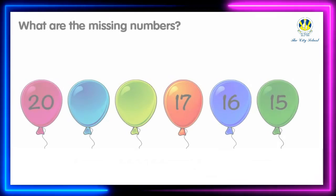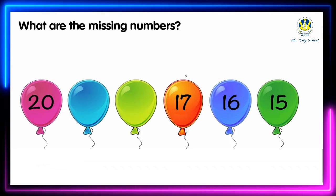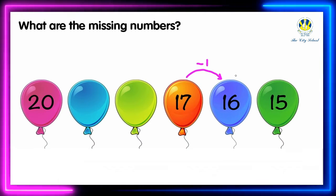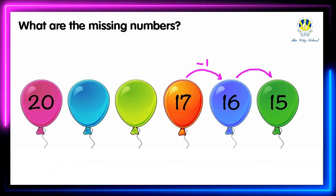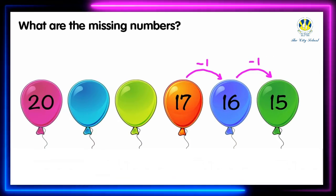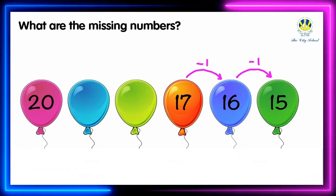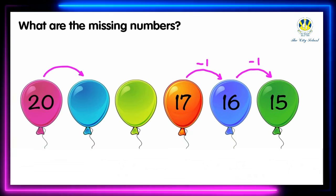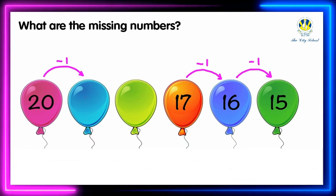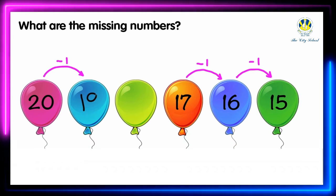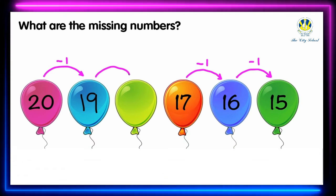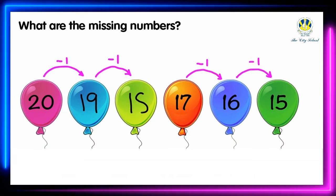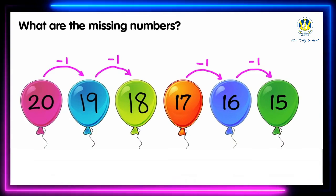Here comes another example. 17 take away 1 equals 16, and 16 take away 1 equals 15. In each step the numbers are decreasing by 1, so the number pattern is to take away 1. From 20 we get 19, and then 19 minus 1 equals 18. The number pattern here is to take away 1.